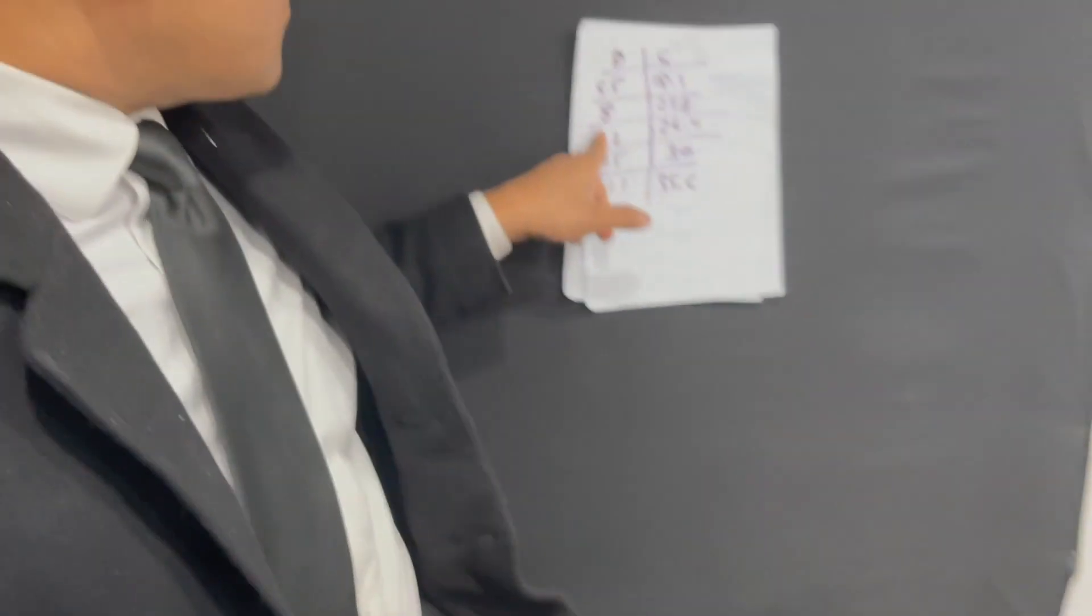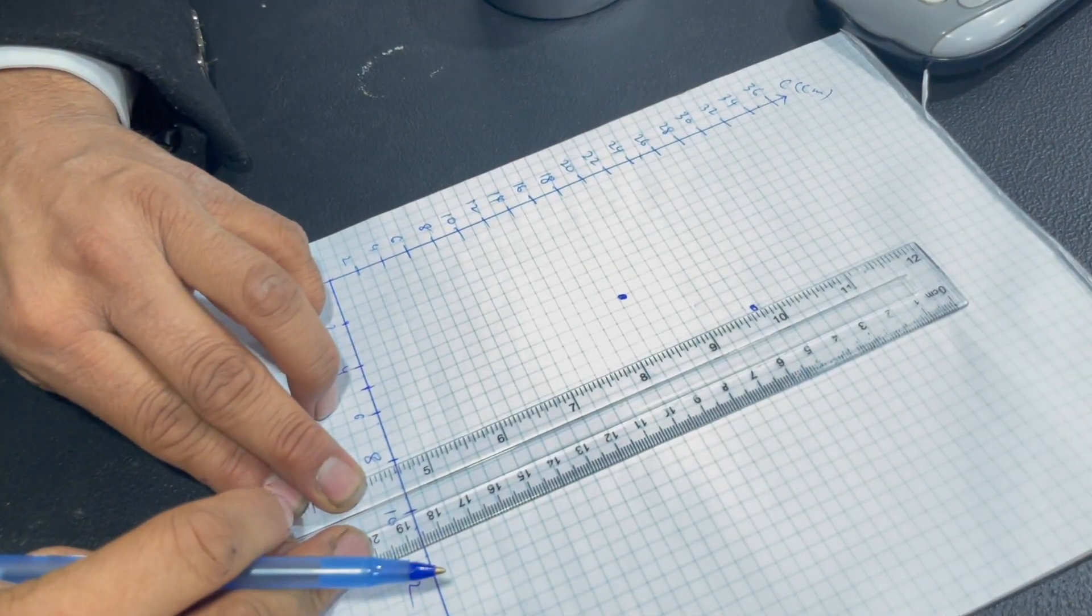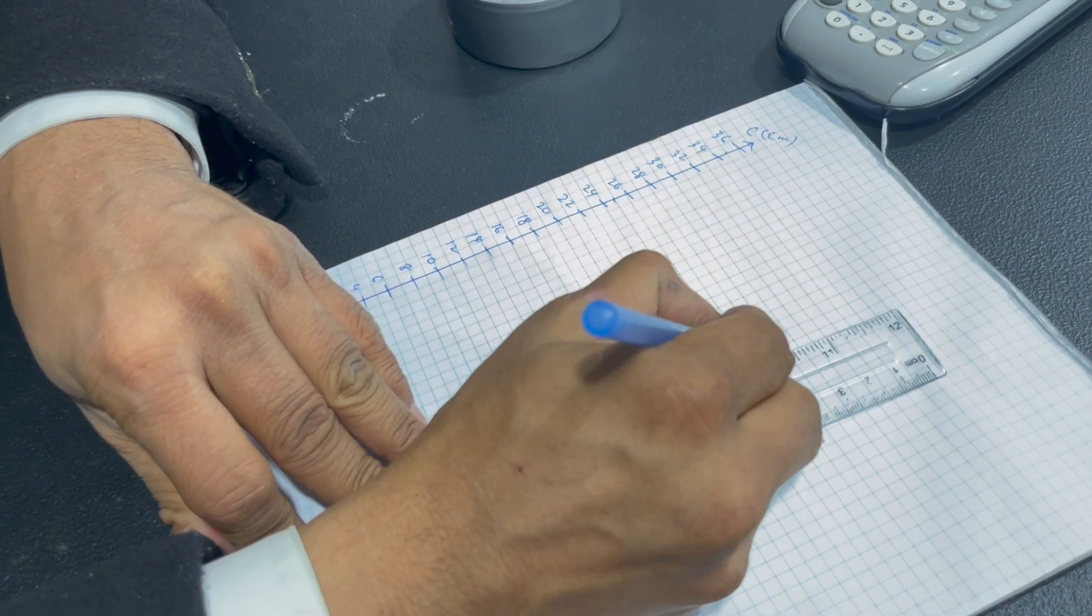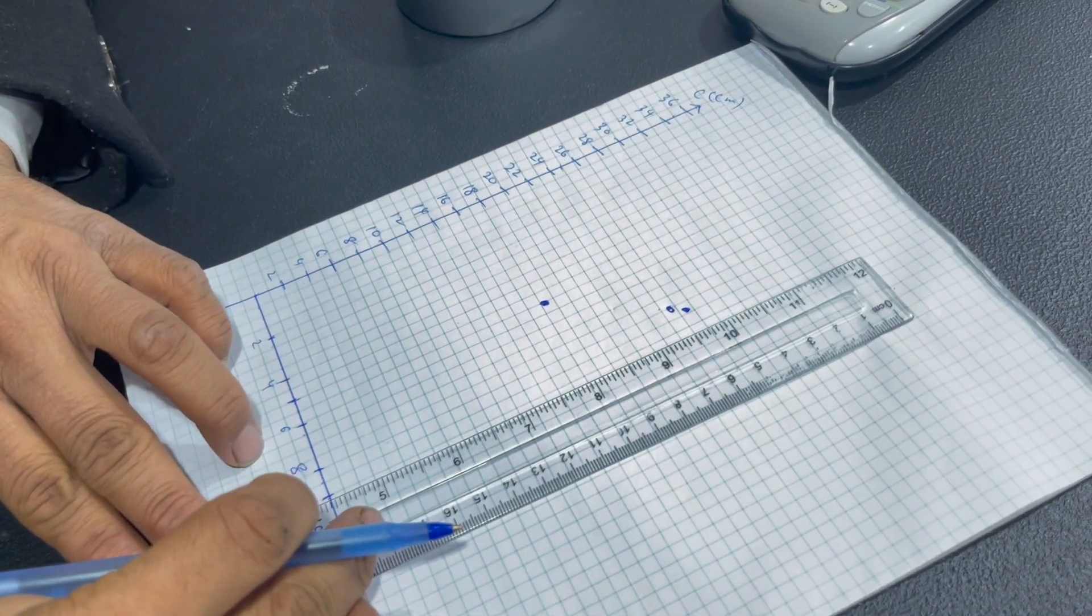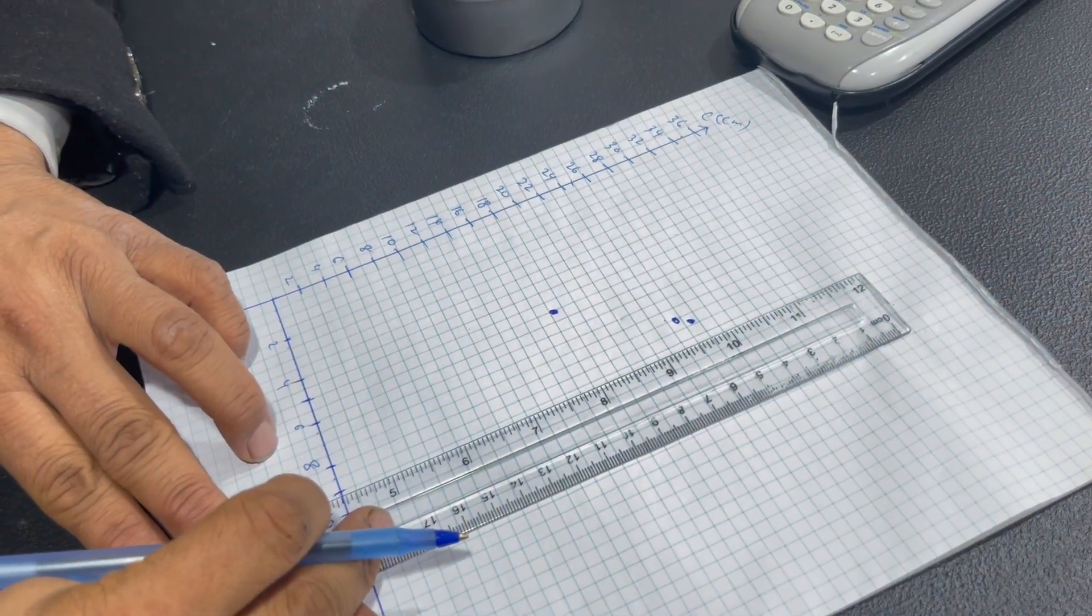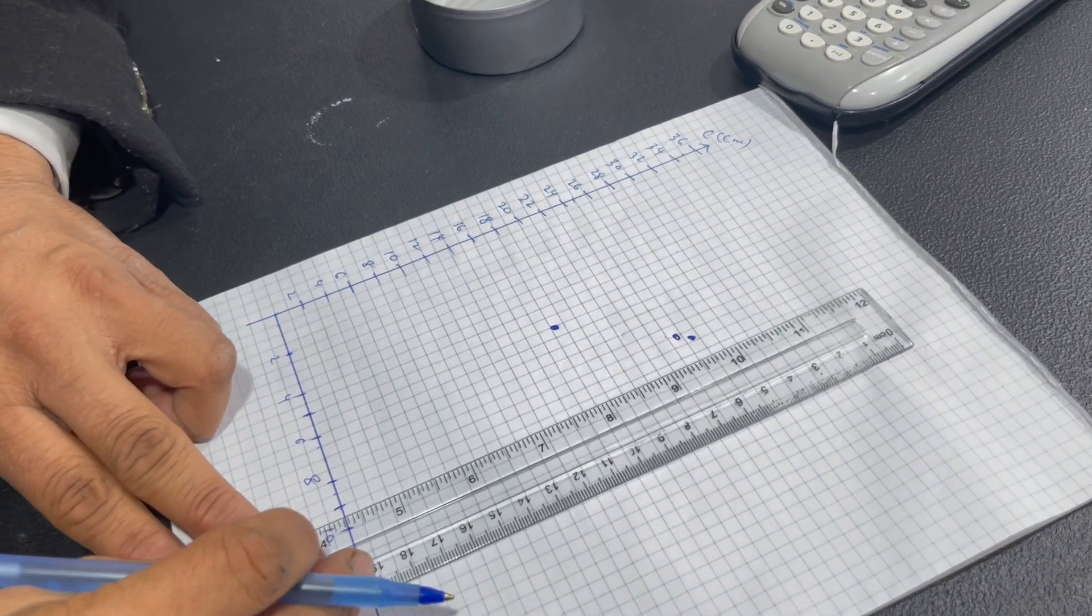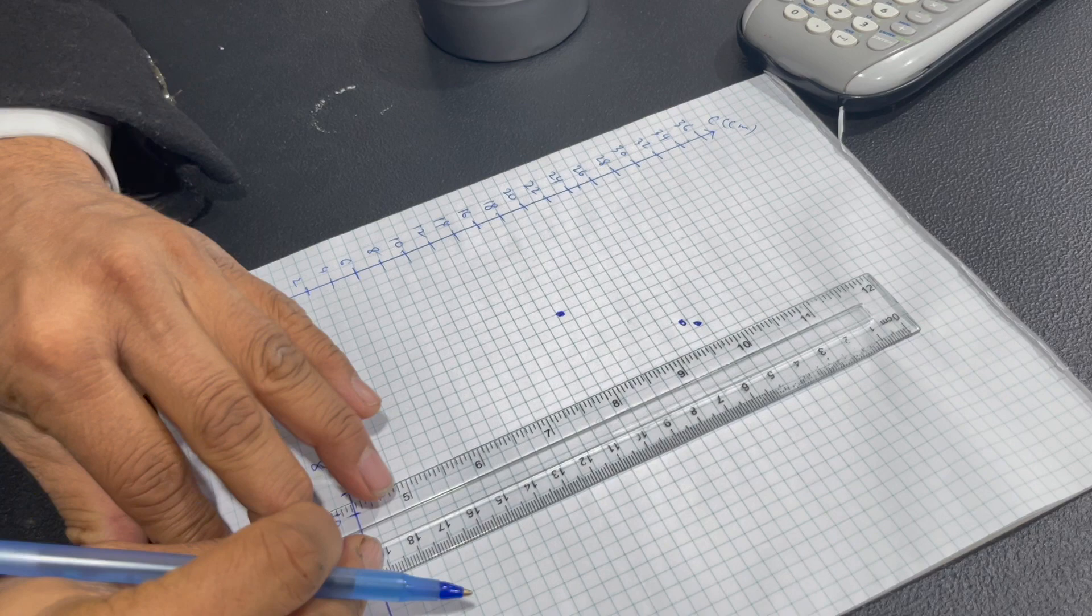The next one is 8.2, 26.4. So right here. 9.5, 30. This is 9.4. This is 9, 9.4. And 30.